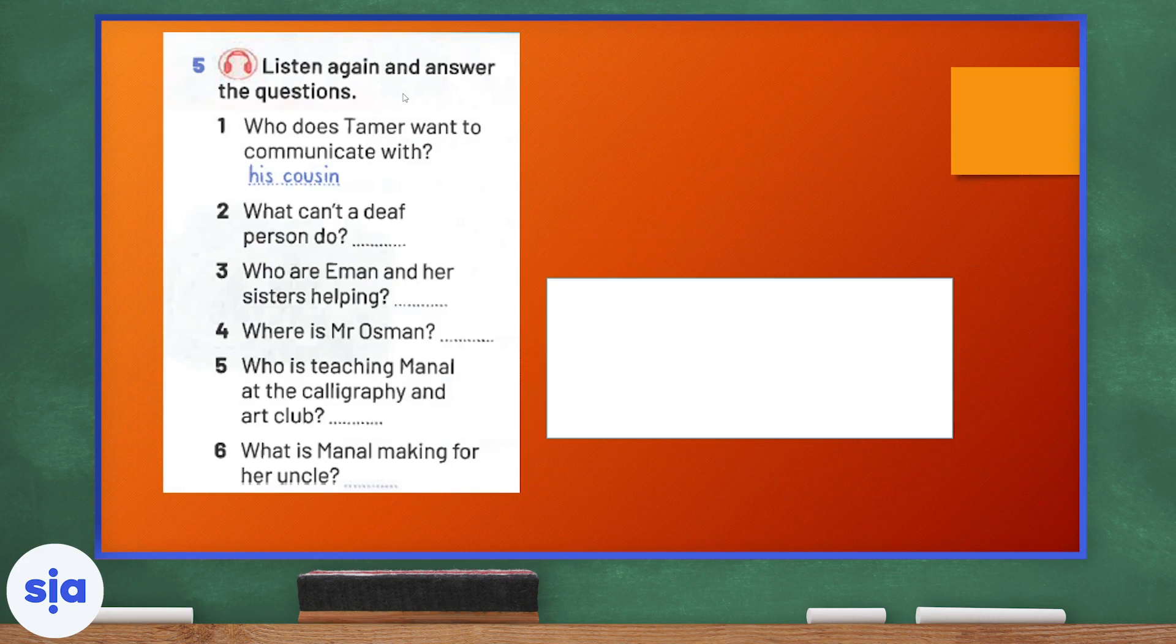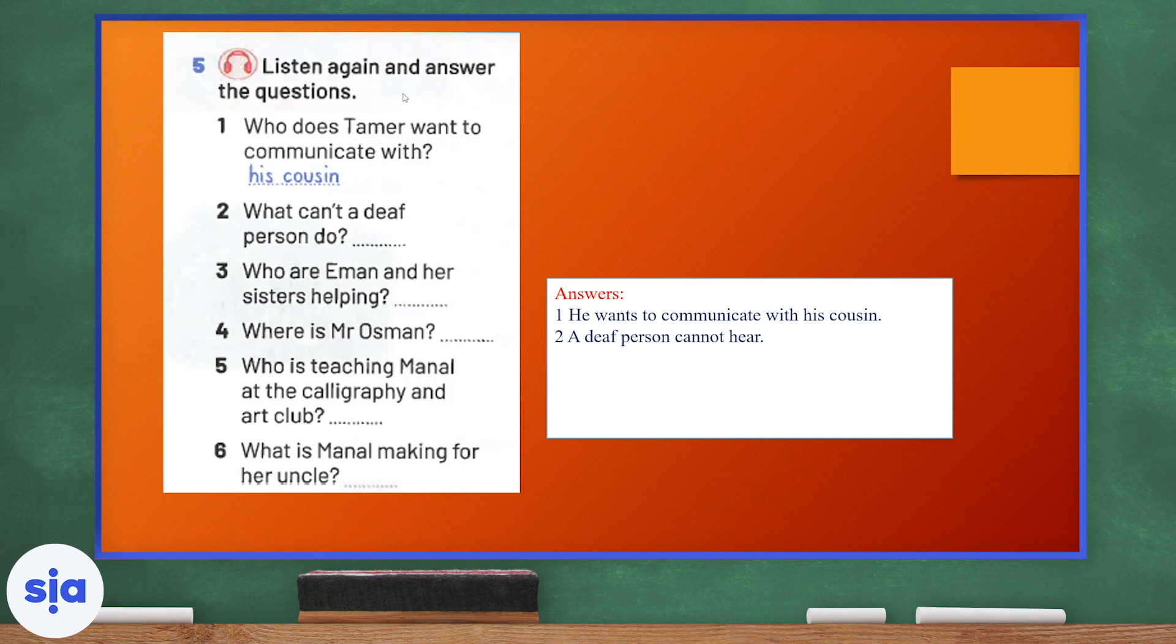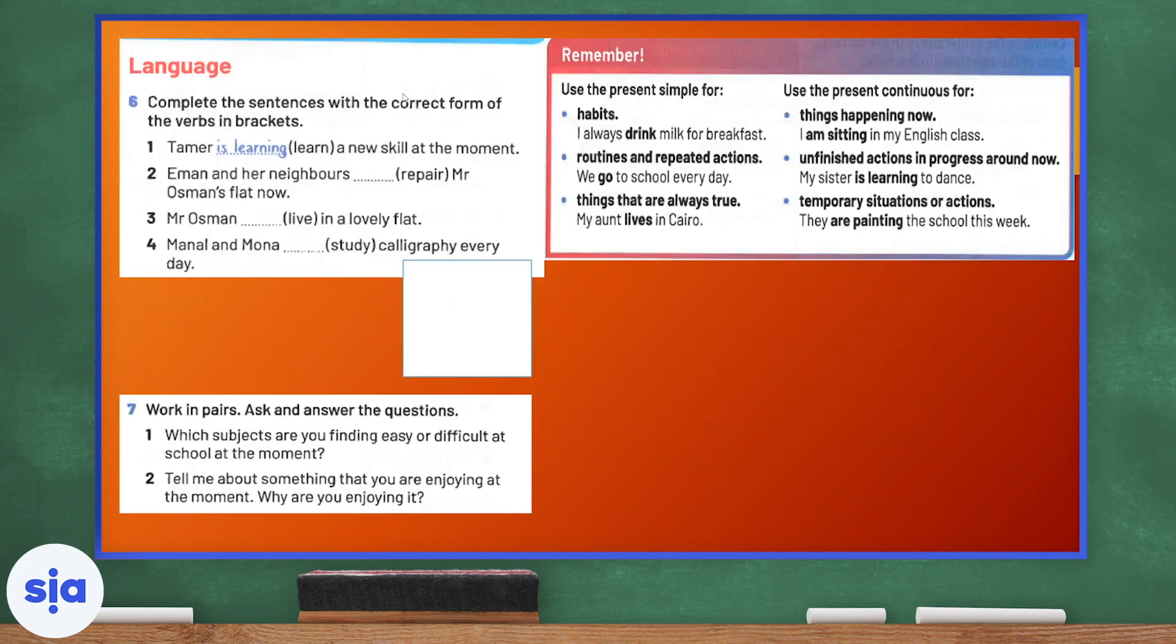Now, I want you to listen again. If you need to, you can rewind and answer the questions. Who does Tamir want to communicate with? Of course, he wants to communicate with his cousin. Number two, what can't a deaf person do? A deaf person cannot hear. Number three, who are Iman and her sisters helping? They are helping their neighbor, Mr. Osman. Number four, where is Mr. Osman? He is in the hospital. Number five, who is teaching Manel at the calligraphy and art club? Her uncle is teaching her. And number six, last but not least, what is Manel making for her uncle? The answer is she's making a calligraphy book. Good job, guys.